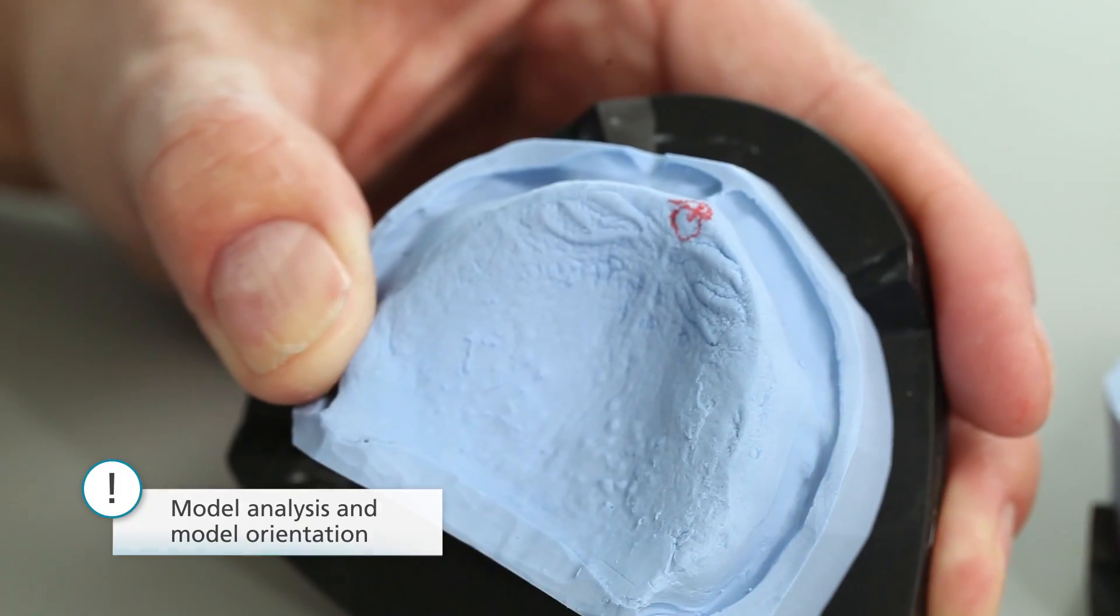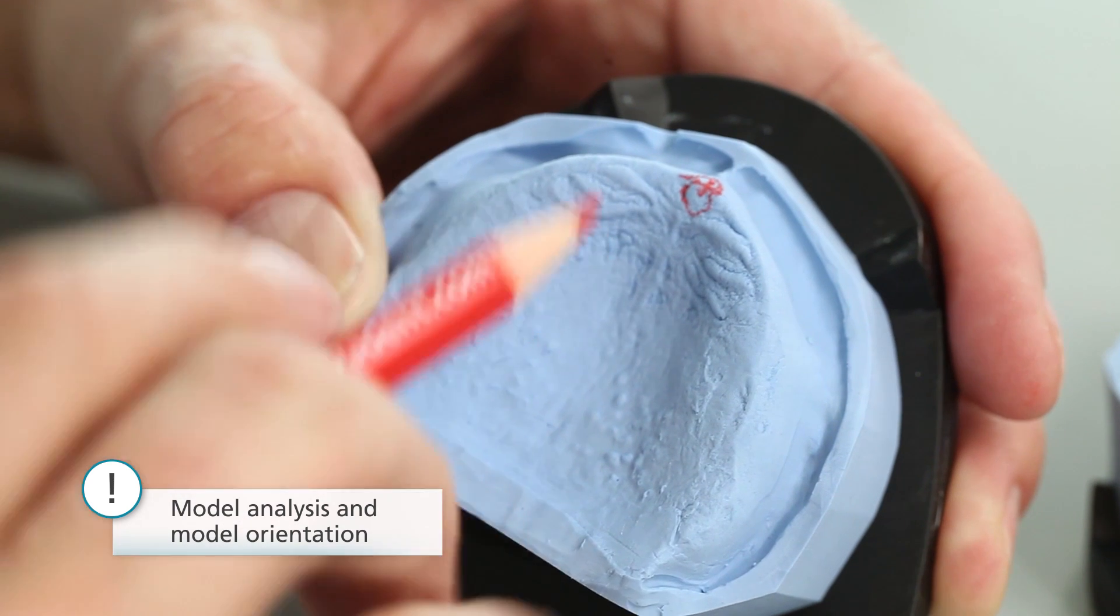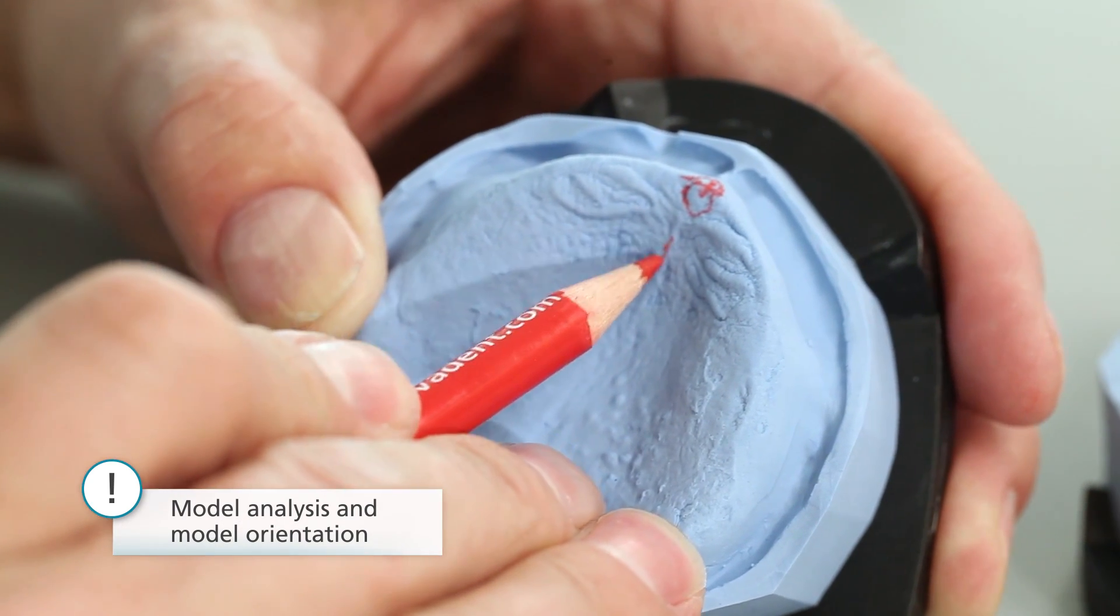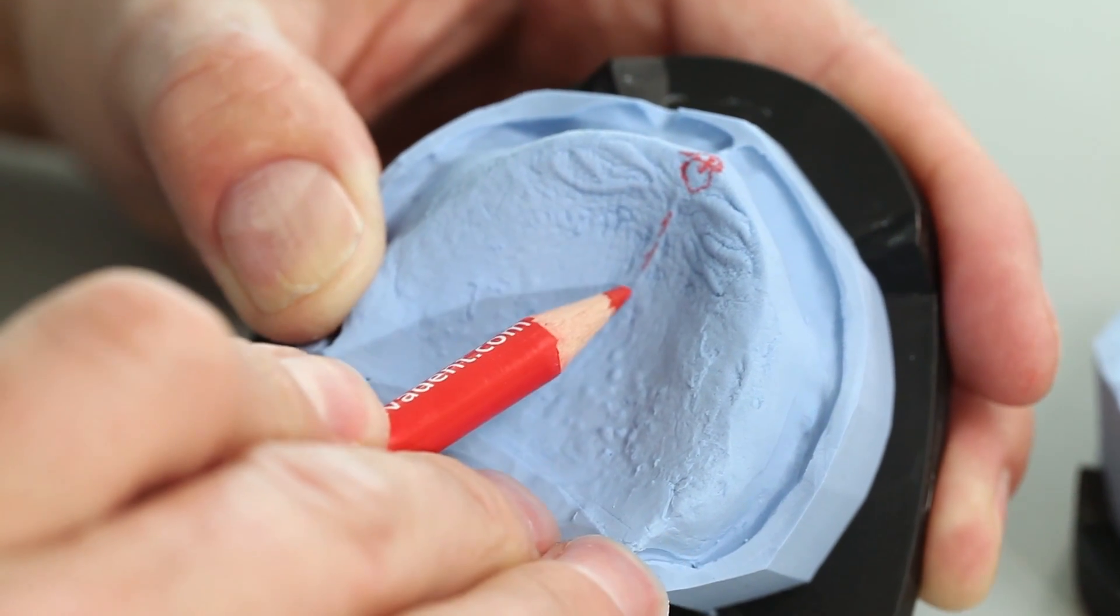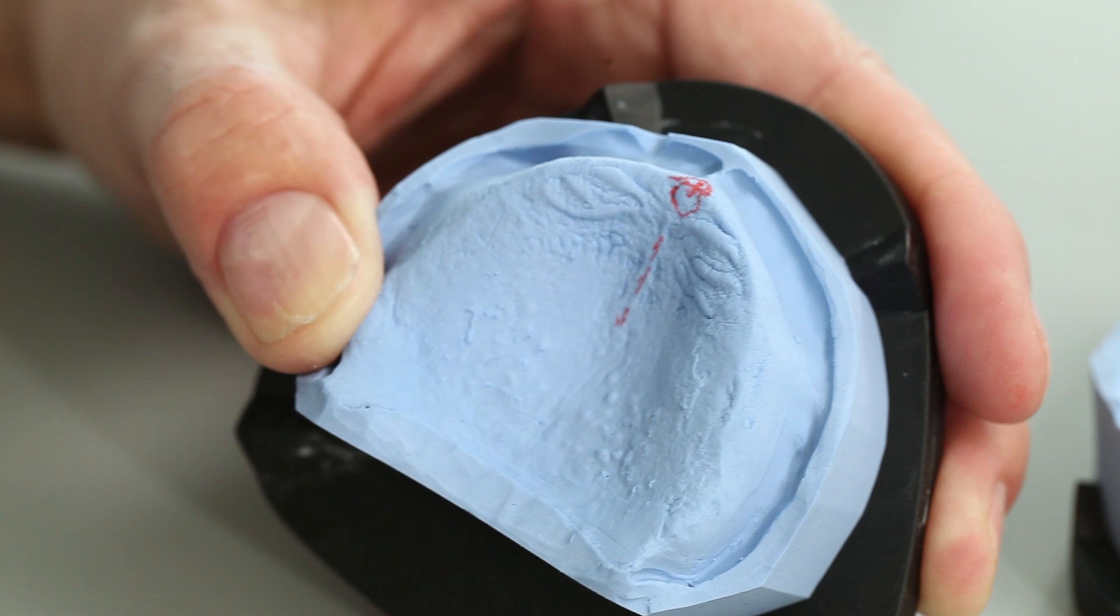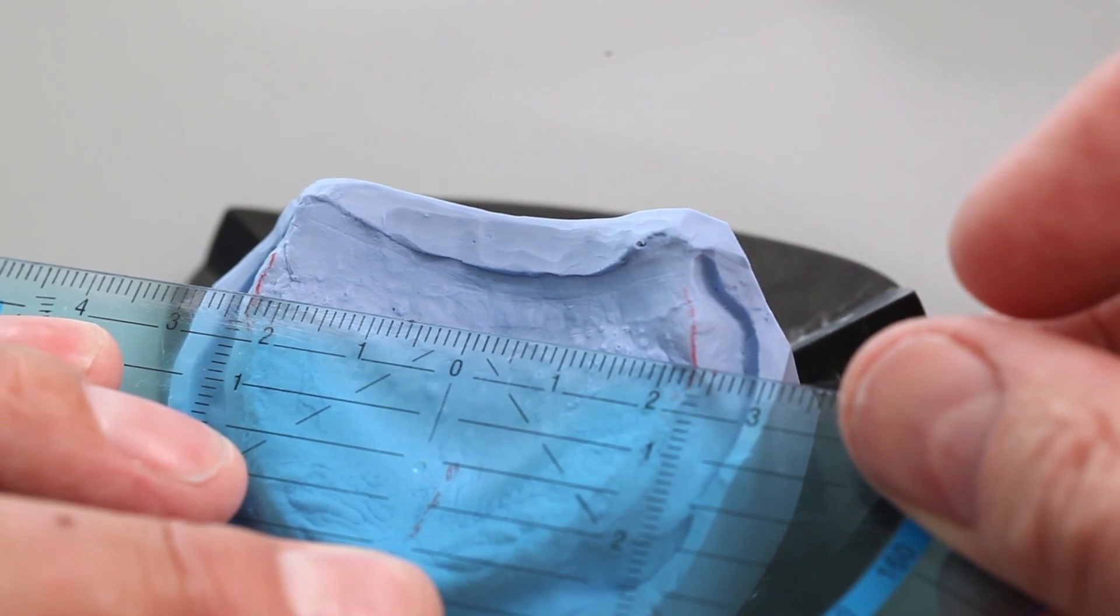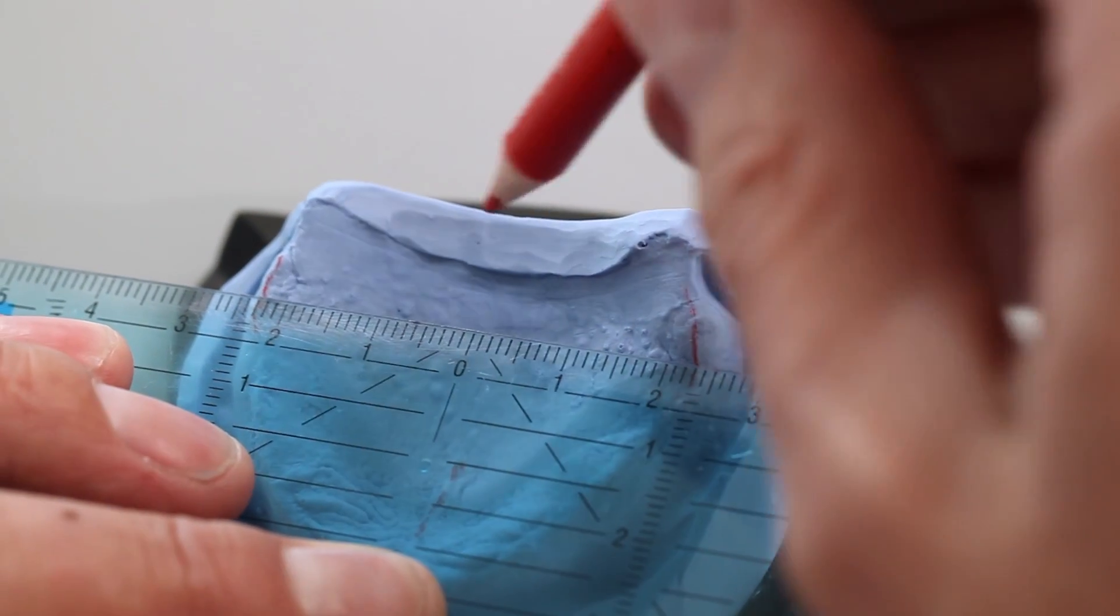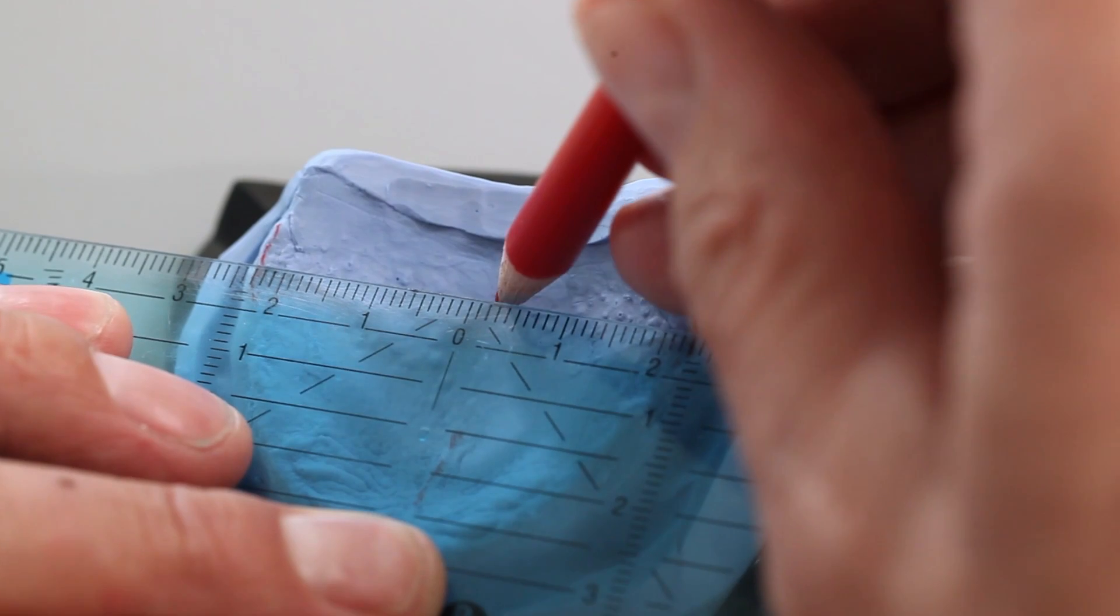The following reference points must be observed for the correct model orientation. The incisive papilla and palatine RAFE provide the anatomical midline. Mark the highest elevation of the tuberosities on both sides. This allows you to determine the dorsal centre.